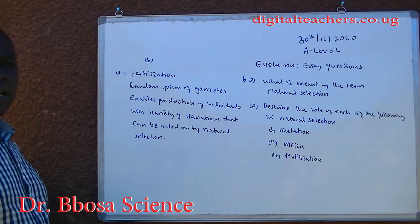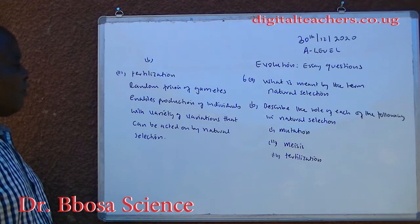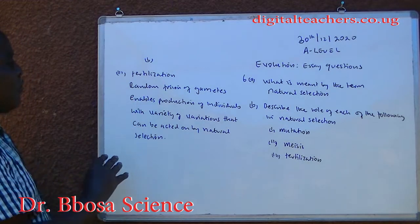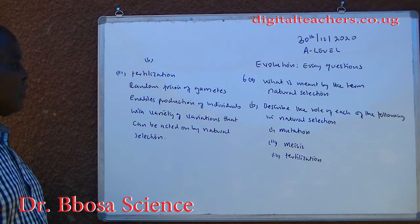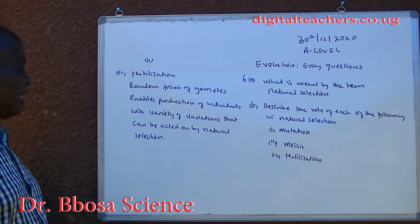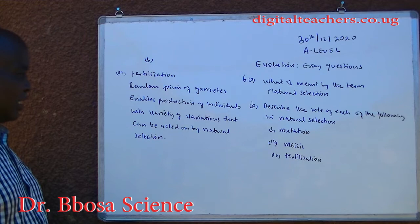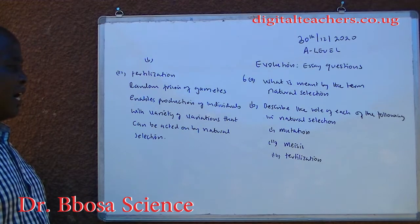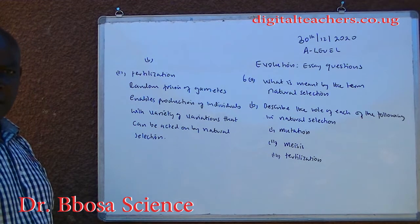Role of fertilization in natural selection: random fusion of gametes enables production of individuals with a variety of variations that can be acted on by natural selection.